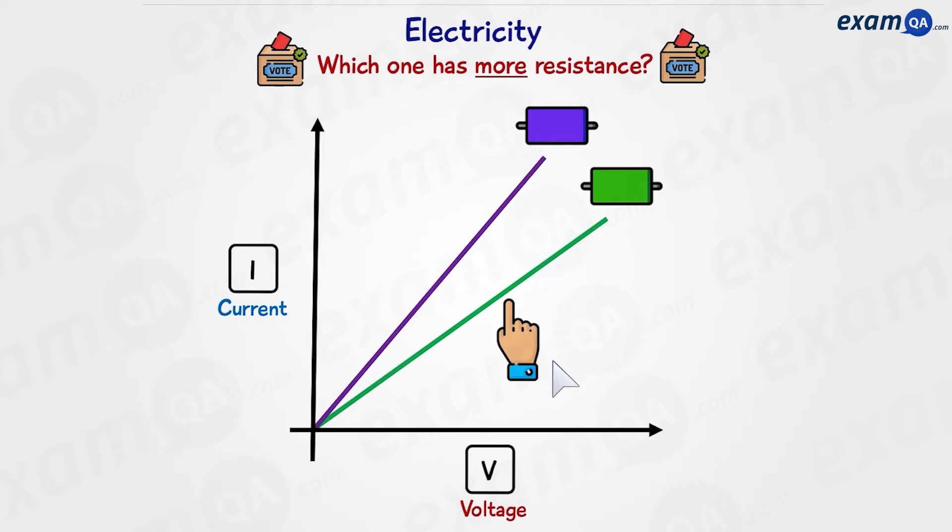which resistor do you think has a higher resistance? The answer is the green one, and that's because it has a lower gradient. In an IV graph, the lower the gradient, the higher the resistance.